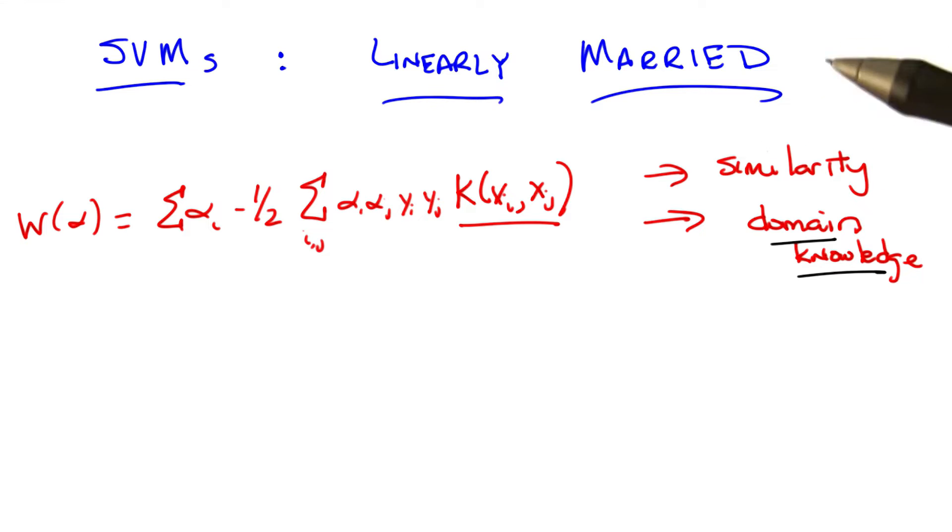I mean, in fact, if you think about it, with the last kernel that we used, computationally there was actually no more work to be done. Before we were doing x transpose y, and now we're still doing x transpose y, except we're then squaring it. So that's just a constant bit more work, right? So this, and that is a kernel.